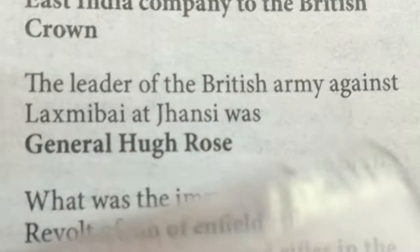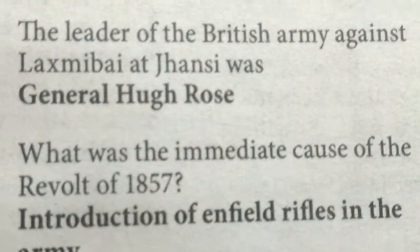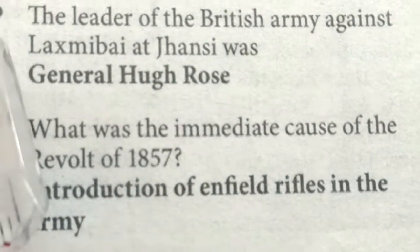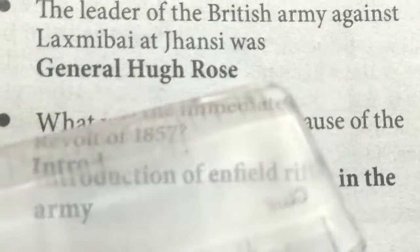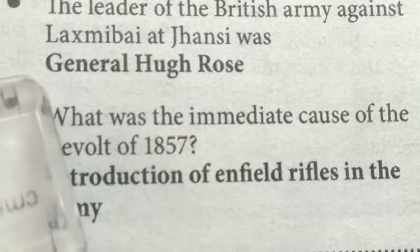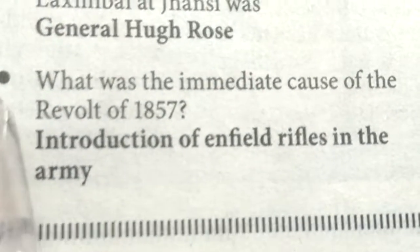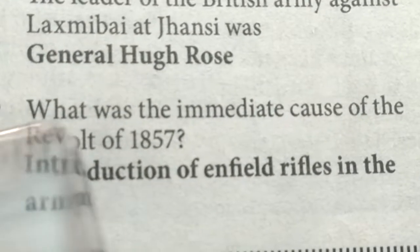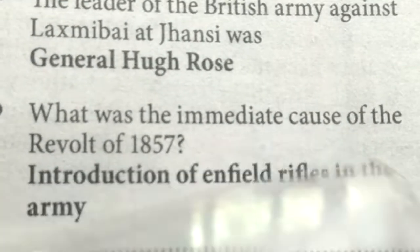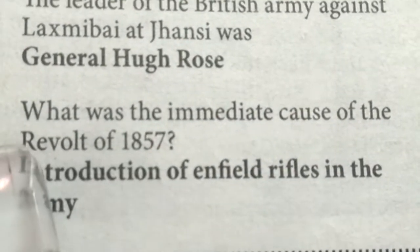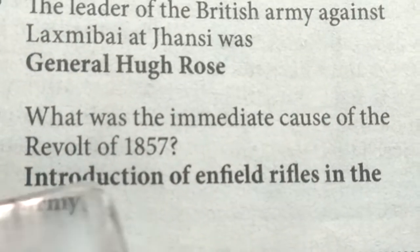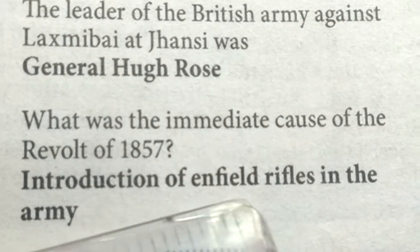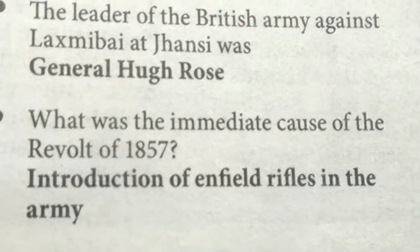The leader of the British Army against Rani Lakshmi Bai at Jhansi was General Hugh Rose. What was the immediate cause of the Revolt of 1857? The introduction of greased Enfield rifles in the army.